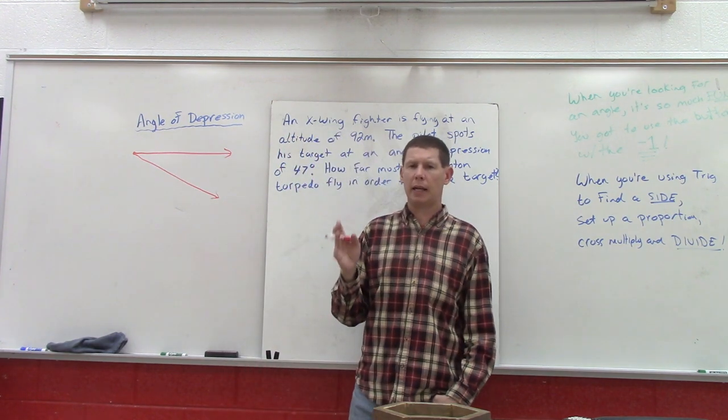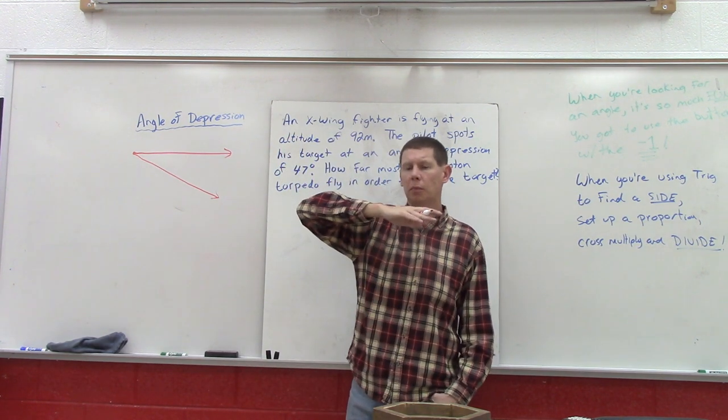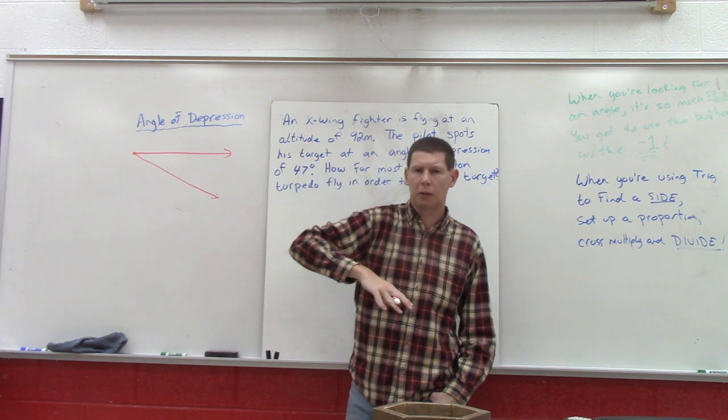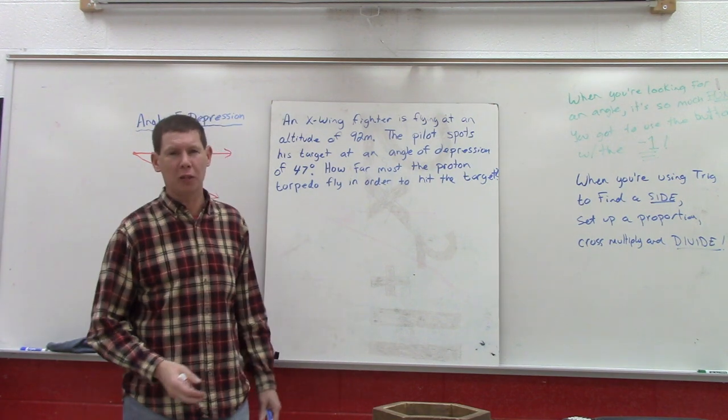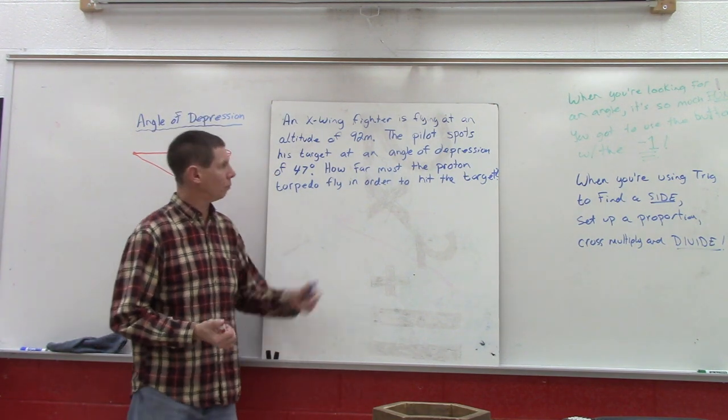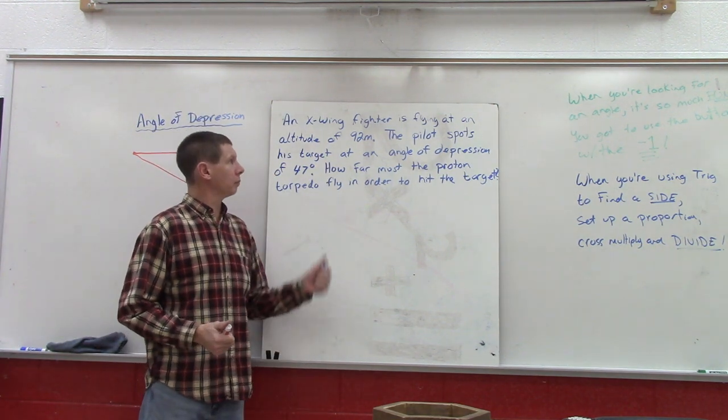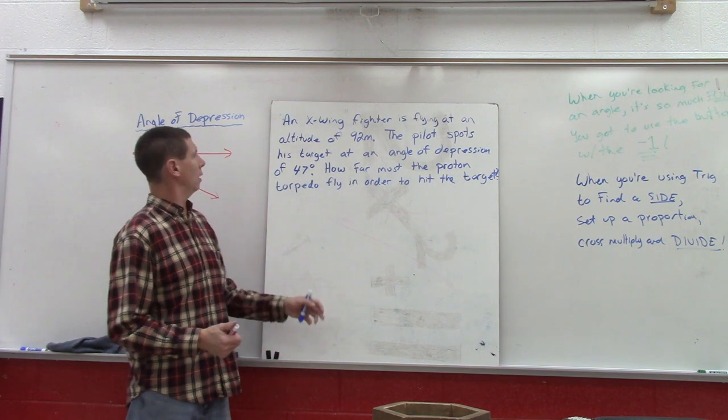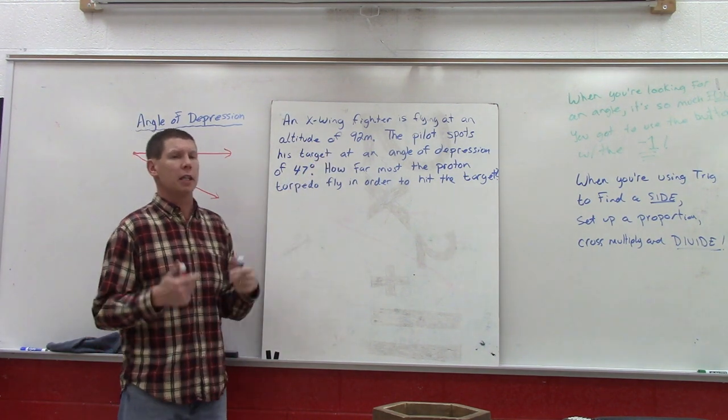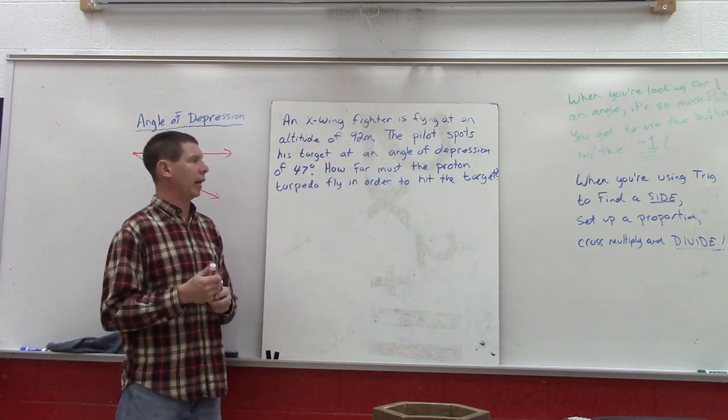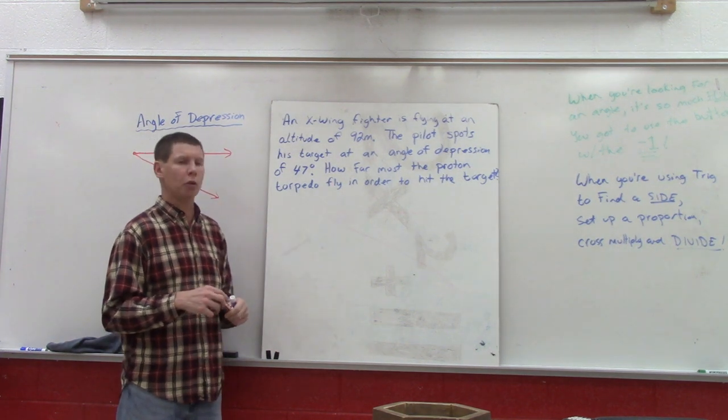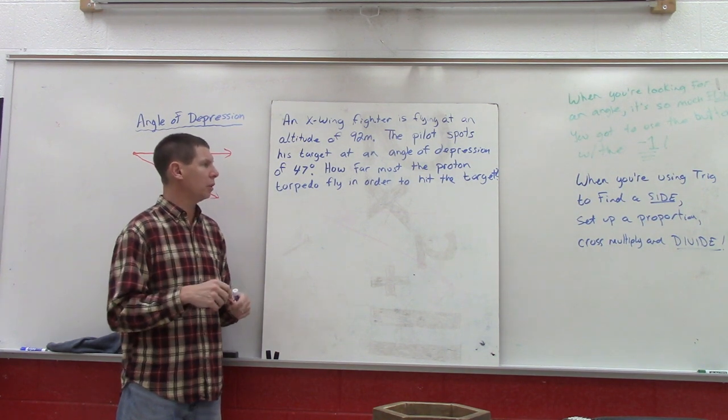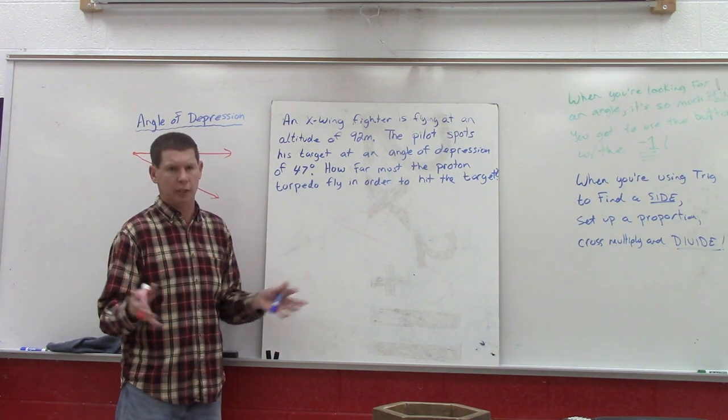So that's what an angle of depression is: a horizontal path and then a path downwards. Let's take a look at this special problem. An X-wing fighter is flying at an altitude of 92 meters. The pilot spots his target at an angle of depression of 47 degrees. How far must the proton torpedo fly in order to hit the target?